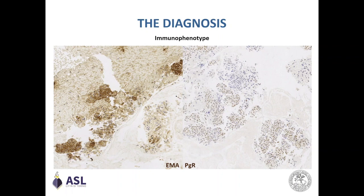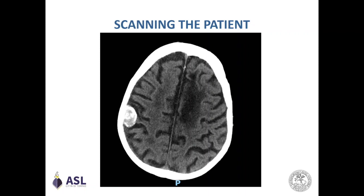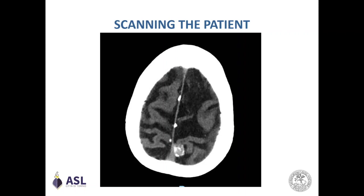The CT head scan showed a nodular intracranial lesion in the right hemisphere and an analogous nodular lesion near the sagittal sinus. These nodular lesions had the characteristics of intracranial meningiomas, so our diagnosis was confirmed. The patient had two intracranial lesions that had caused the metastases. Given the age of the patient, a non-operative approach was chosen, and he did not undergo surgery for the lung or intracranial lesions.